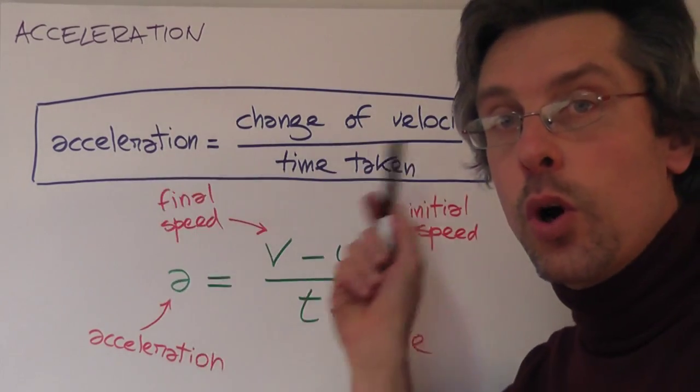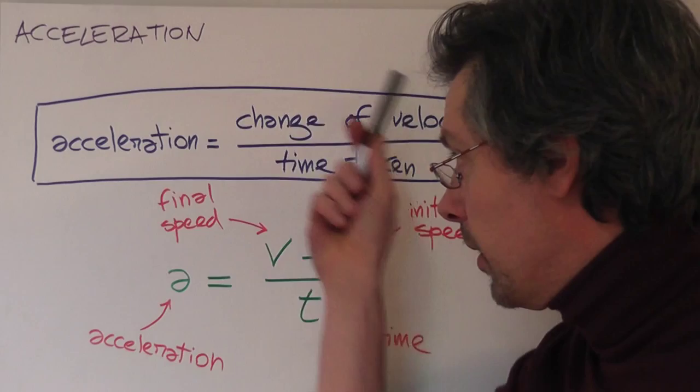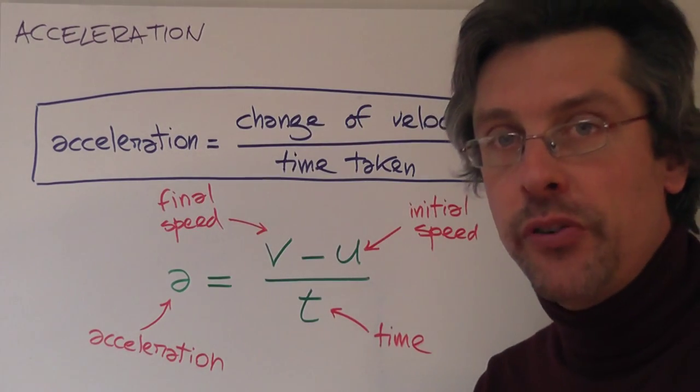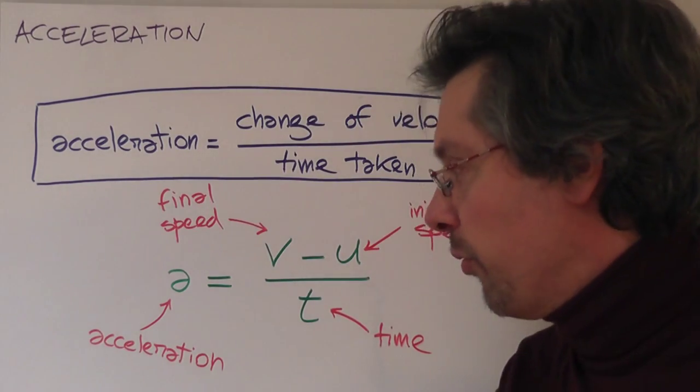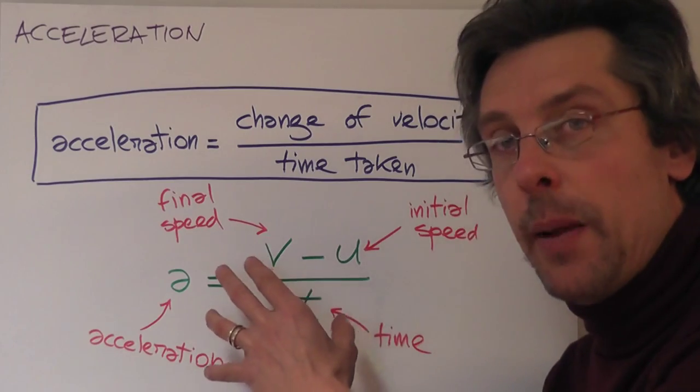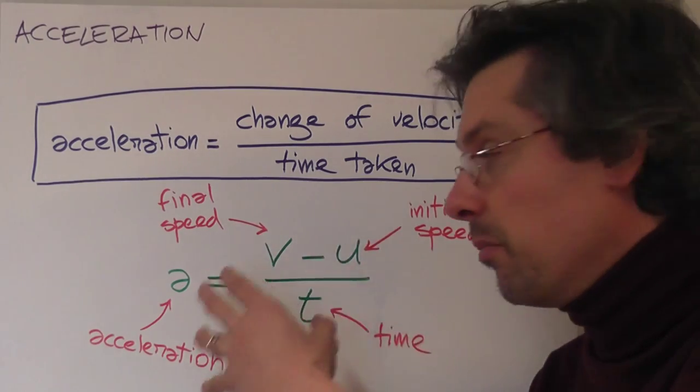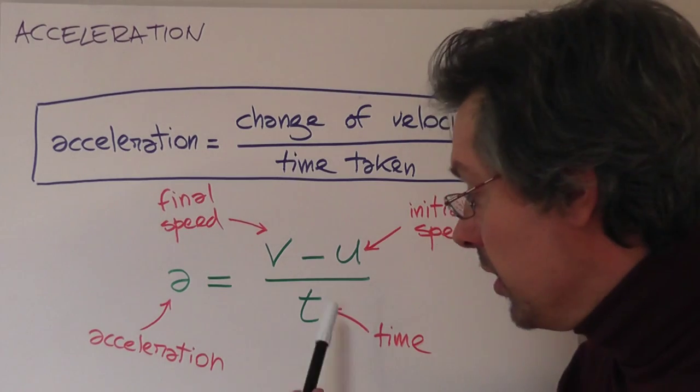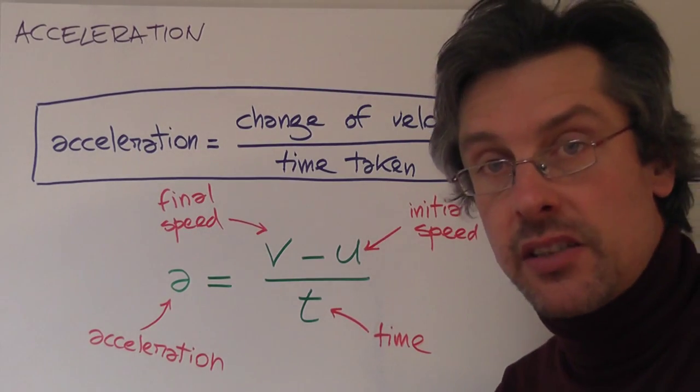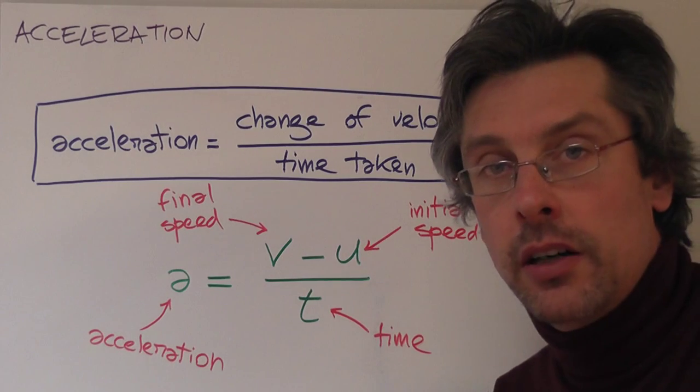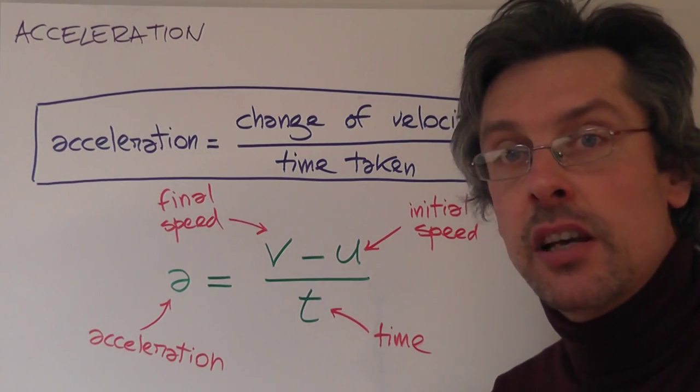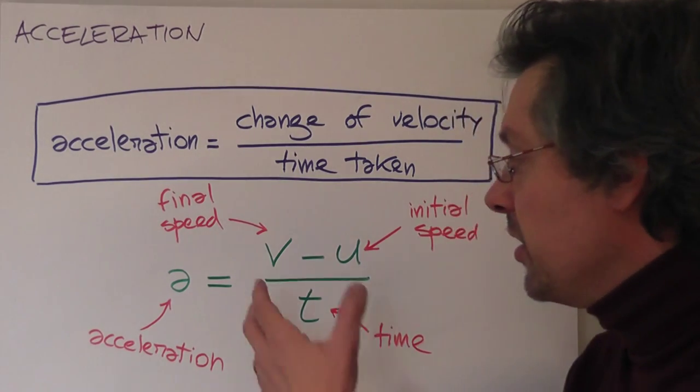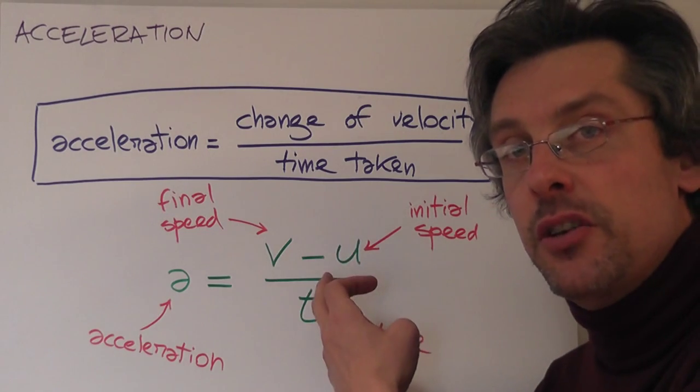Again this is a word formula but we do prefer symbol formulas and this is the same thing written in symbols. So we have a, that stands for acceleration, t, that stands for time, and then the top part represents this change because indeed we have two symbols, v and u.